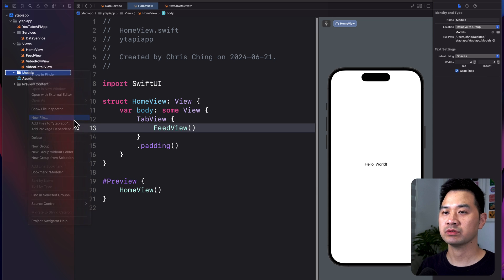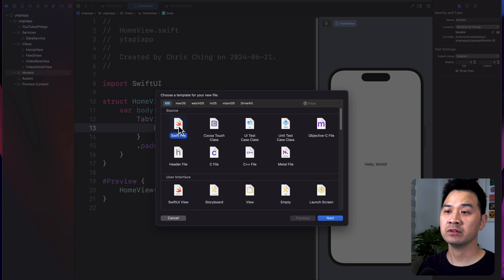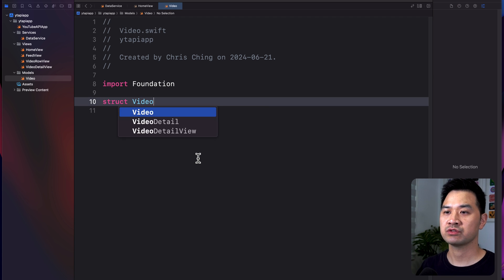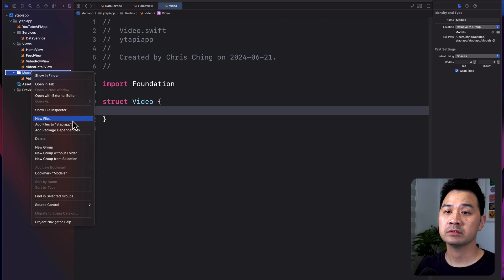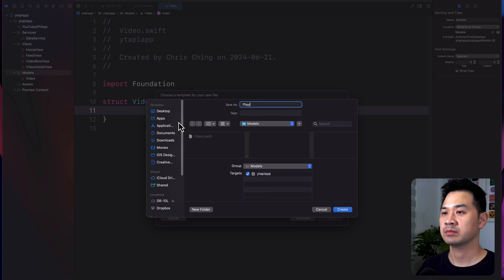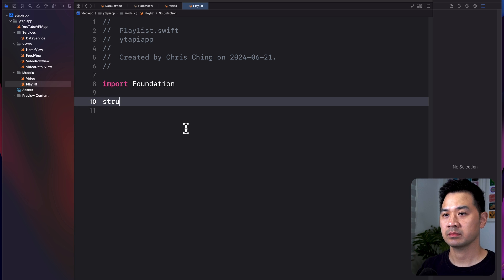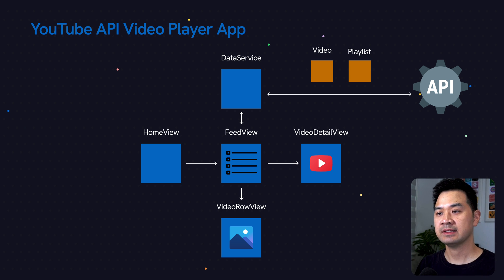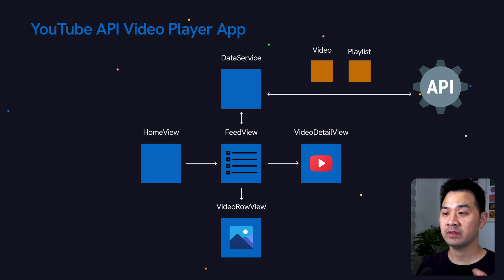Now let's create the two models. These are going to be Swift files because they're not views. One is Video — I'll create the struct. And then we're going to create another one for Playlist. Let's bring up the diagram and double check: we have the home view containing the tab view containing an instance of the feed view. The detail view comes up as a sheet in the feed view. We've created the video row view inside a list component in the feed view. We have the data service, and the Video and Playlist models.